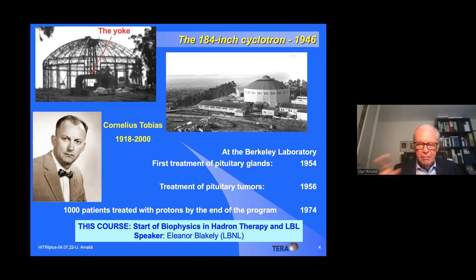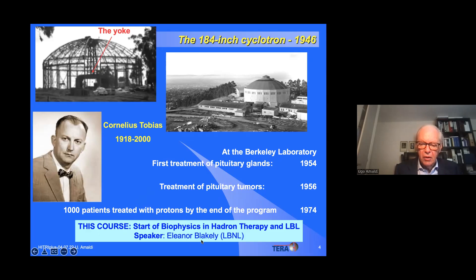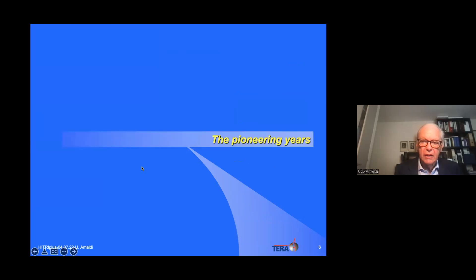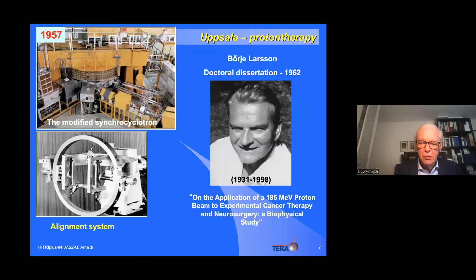In Berkeley, patients were first treated in 1954 — women's pituitary glands for metastatic breast cancer, not a tumor treatment per se but a way to avoid metastatic disease. Treatment of larger tumors started two years later, and about 1,000 patients were treated with this accelerator. You will hear Dr. Blakeley, who was there at the time, tell you about those wonderful pioneering years.